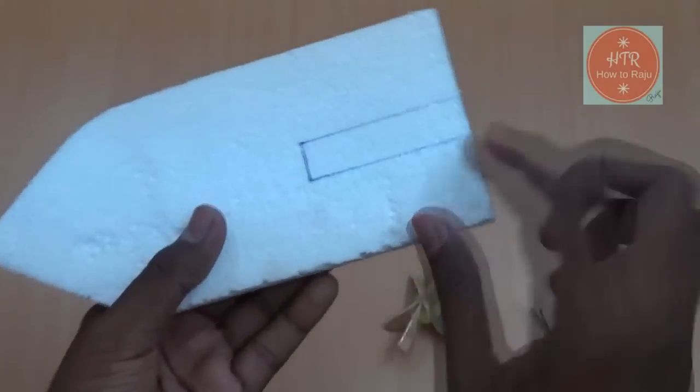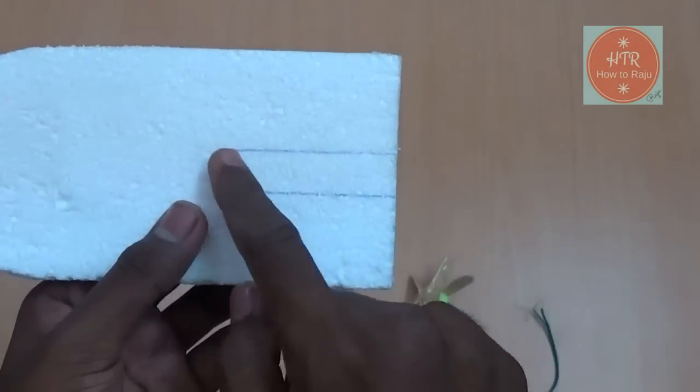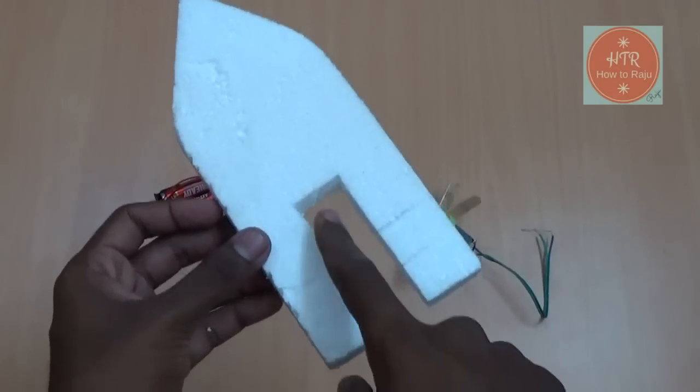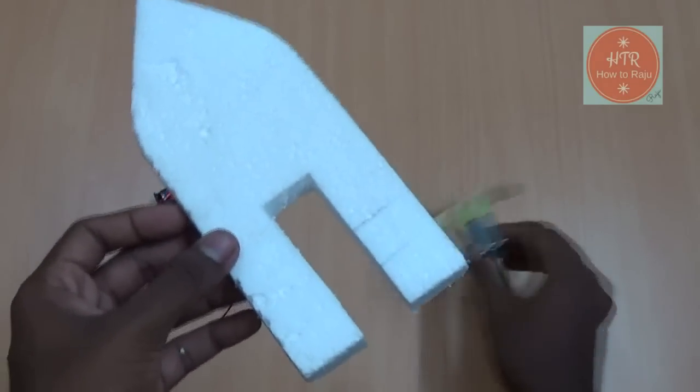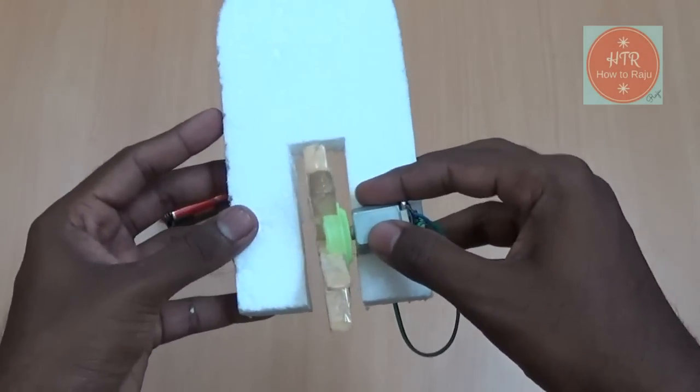Next, take the thermocol and draw the lines like this, then cut the space in the center. After cutting the space, stick the DC motor in this place using the glue gun.